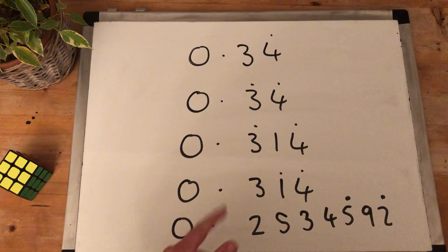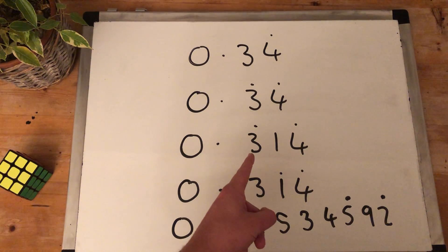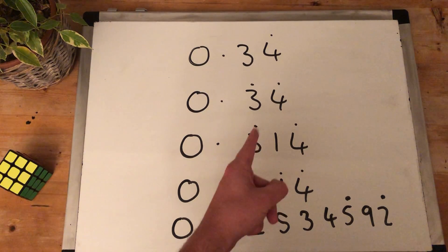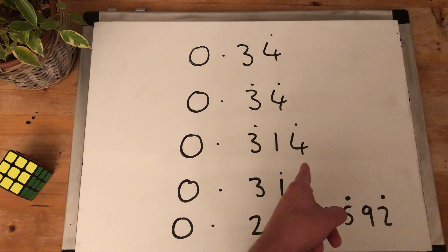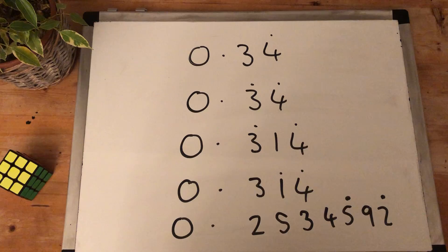0.314 where we know the 3 recurs, we know the 3 goes on forever because the recurring symbol is above the 3, we know the 4 recurs because the recurring symbol is above the 4, but on this one the 1 recurs too because it's sandwiched between two recurring numbers.